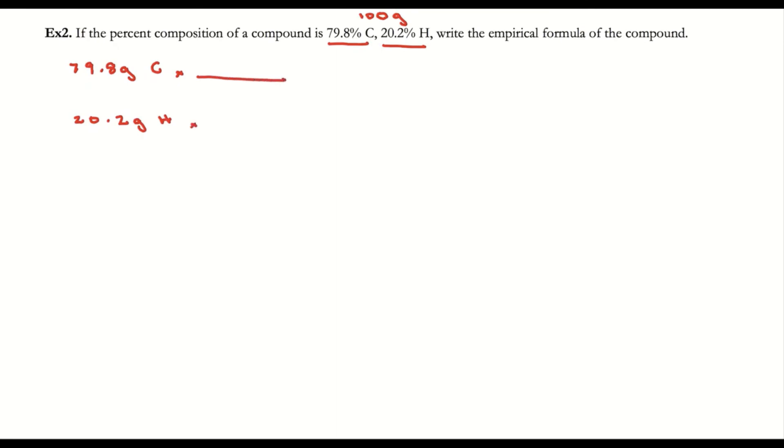To get my subscripts, I need to first convert into moles. I'm going to get grams on bottom for both and moles on top. I need the molar mass of each: carbon is 12.011 and hydrogen is 1.008.